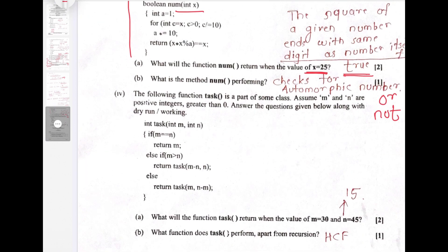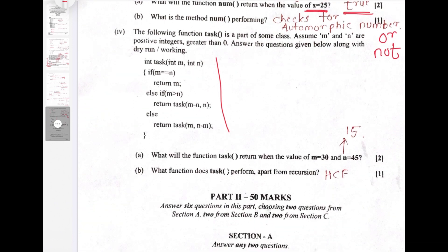This function calculates HCF, highest common factor. It is finding or searching or calculating for highest common factor. So highest common factor of 30 and 45 is 15. Part two of this paper is solved in my next video. Thank you.